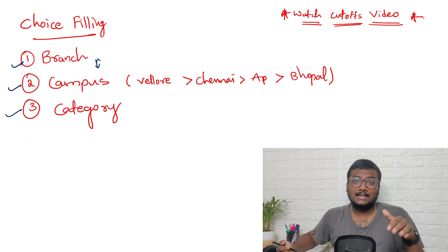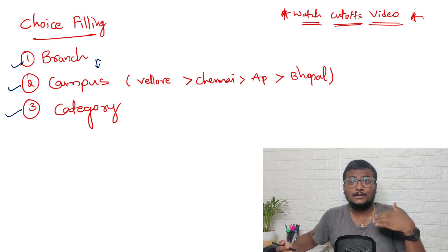For example, if you're getting Vellore ECE and in other campuses like Chennai you're getting CSE - if you're preferring branch you need to go for CSE. If you're preferring campus, even though it's ECE you will choose Vellore. That's what I mean.